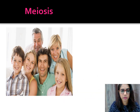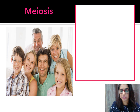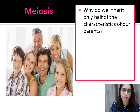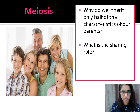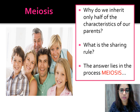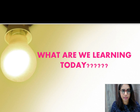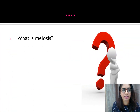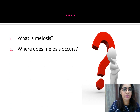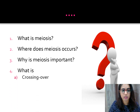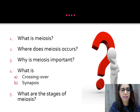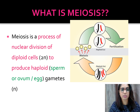In meiosis there are two important questions you should know. First: why do we inherit only half of our characteristics from our parents? And what is the sharing rule? The answer lies in the process of meiosis. Today we are going to learn: what is meiosis, where does meiosis occur, why is meiosis important, what is crossing over and synapsis, and what are the stages of meiosis.